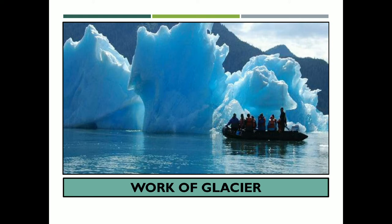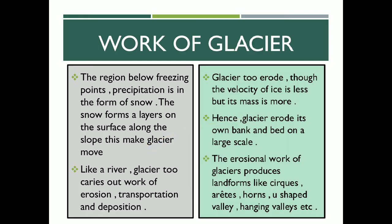I have already discussed that each and every agent of erosion will carry out the same process — erosion, transportation and deposition. Har ek factor, chahe woh water ho, chahe woh glacier ho, chahe woh wind ho — yeh erosion, transportation and deposition carry out karenge. Ab dekhte hain ki glacier yeh teen processes kaise karta hai.